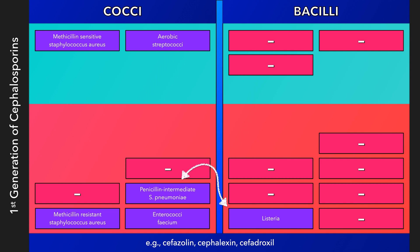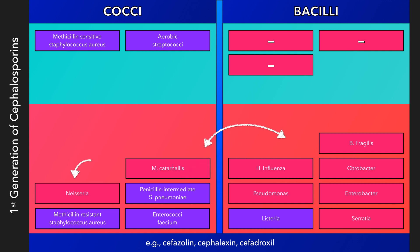Lack of activity against enterococci and listeria species will continue throughout this lecture. These agents do not have extensive gram-negative coverage, but they do provide some coverage against gram-negative enterics, including E. coli, indole-negative Proteus mirabilis, and Klebsiella pneumoniae. When the organism is susceptible, these agents can treat, for example, a simple urinary tract infection.